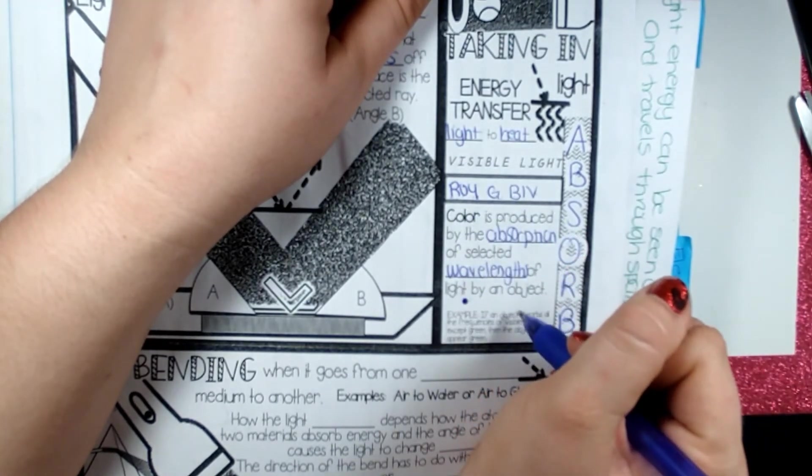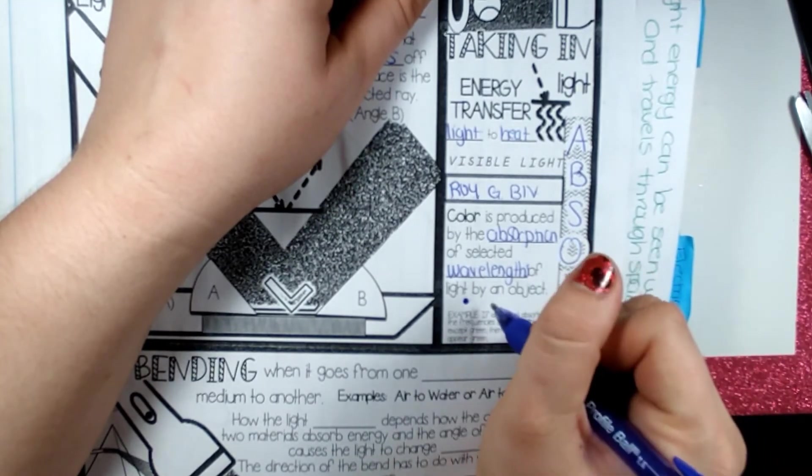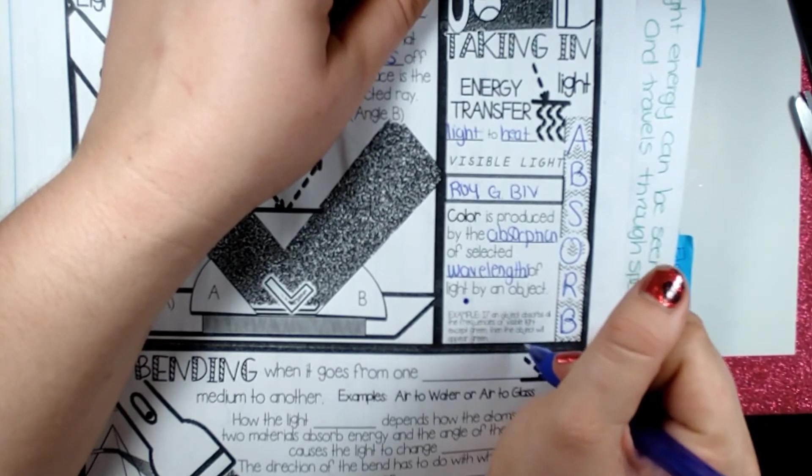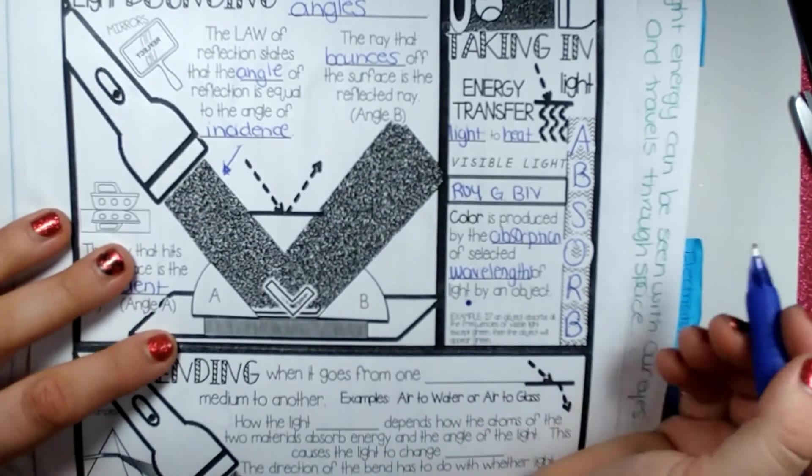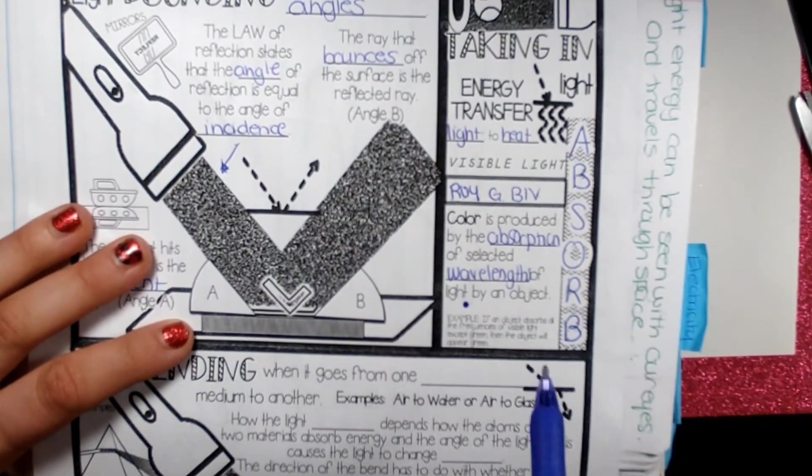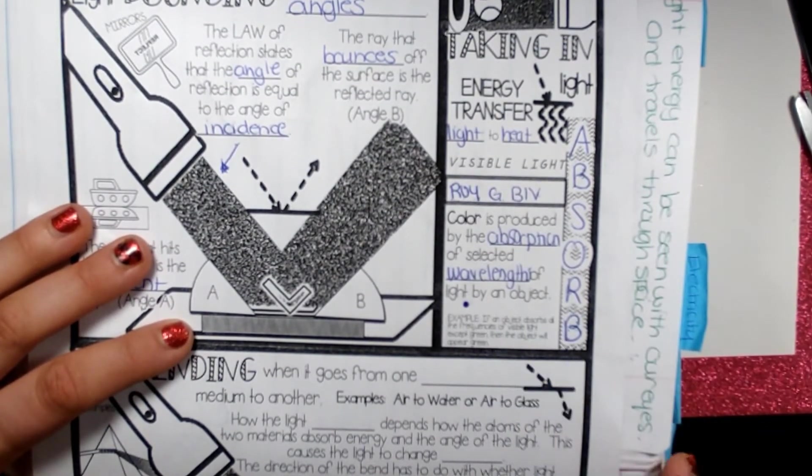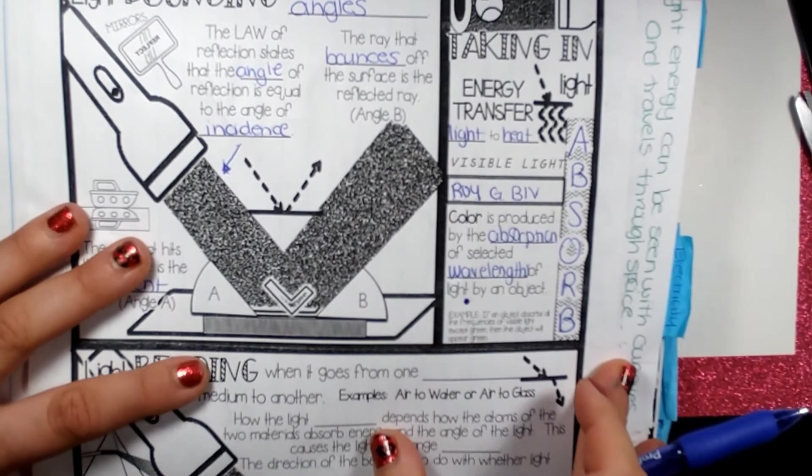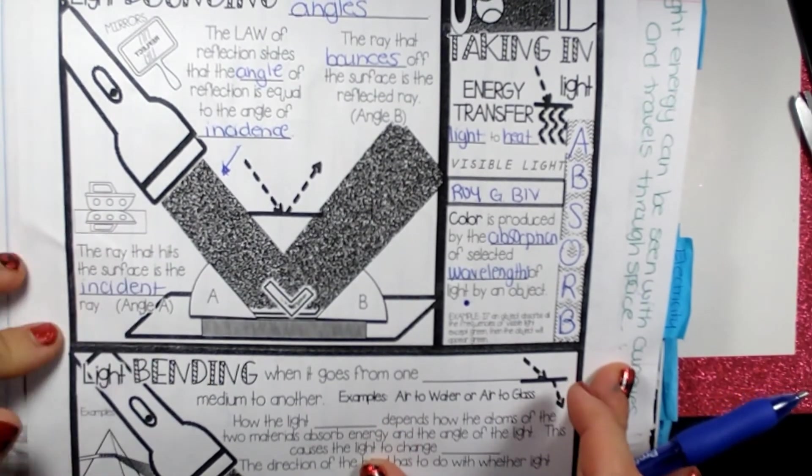White is the absence of color, and black is all colors absorbed. So white reflects all the colors and black absorbs all the colors. So if black absorbs all the colors, it also absorbs all the heat as well. So that is how light happens.